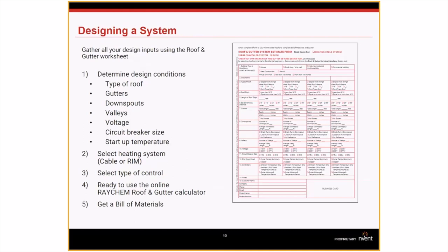Raychem has a roof and gutter form available at www.nventthermal.com to help gather all necessary information from your customer. This includes roof type — shingled or metal — distance between metal seams, overhang size, whether gutters need tracing and their width, depth, and length, downspout height and width to determine single or double trace, and valley locations. You'll also need to know what voltages are available — 120V, 208V, 240V, or 277V for larger systems.